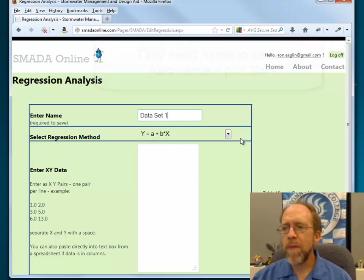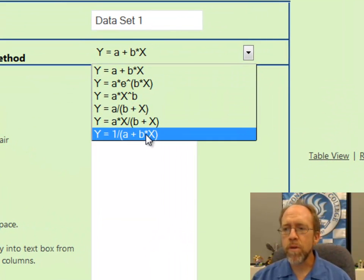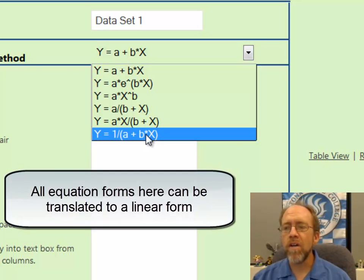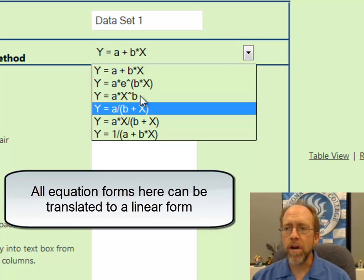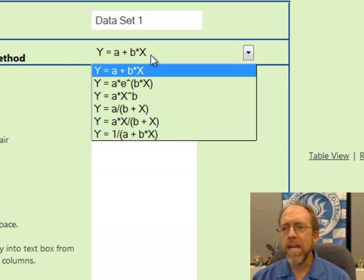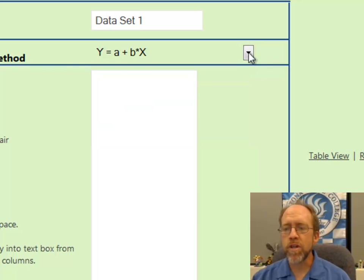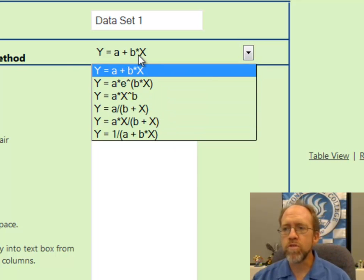and then I have the regression method, which I can choose from different regression methods. All of these regression methods are conversions to a linear method and then the actual calculation of the regression parameters. So essentially the way regression is going to work here is we're going to enter y data and x data, and it's going to calculate a and b so that it fits this specific curve, and you have multiple curves to choose from here.